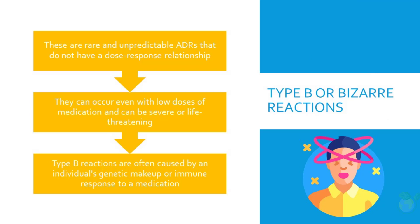Type B, or Bizarre Reactions, are rare and unpredictable ADRs that do not have a dose-response relationship. They can occur even with low doses of medication and can be severe or life-threatening. Type B reactions are often caused by an individual's genetic makeup or immune response to a medication. For example, some people may develop an allergic reaction to penicillin, which can cause swelling, hives, and difficulty breathing.